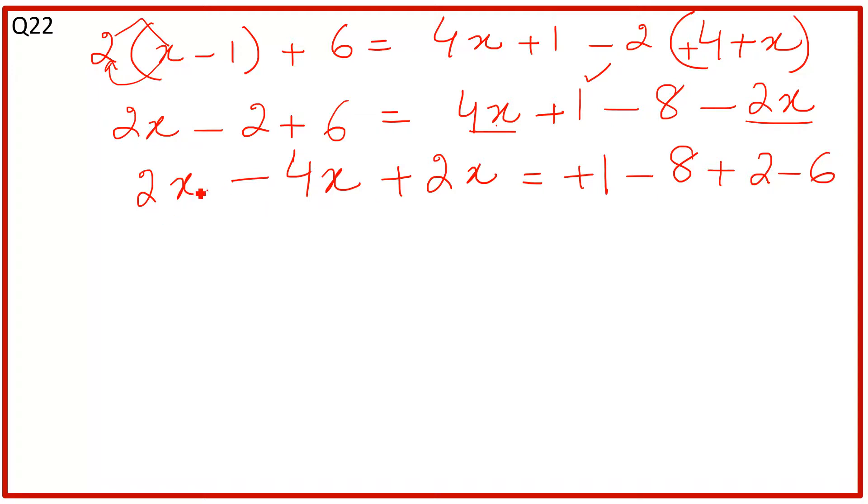So we have positive 2x, positive 2x, and negative 4x on the left. These cancel to give 0. On the right, positive 3 minus 14 equals negative 11. So 0 = -11.